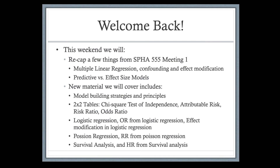In this second set of meetings, we're first going to recap material from the first meeting — specifically some reminders about multiple linear regression, what confounding and effect modification are, how they work, and their interpretations. We're also going to talk about the two-sample t-test and how linear regression can be used as a way to do an adjusted t-test.